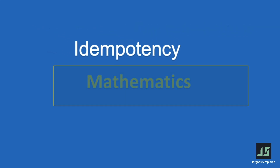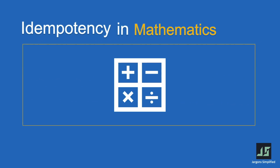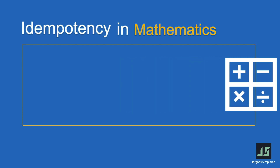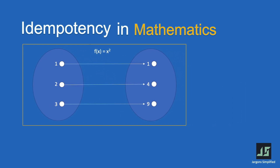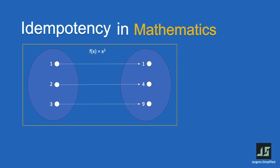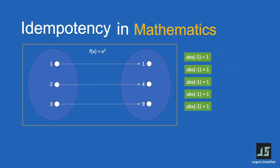In mathematics, idempotency is related to operations or functions that maintain their results when applied multiple times. If performing the operation once gives a particular outcome, repeating the operation will yield the same outcome. For example, taking the absolute value of a number is an idempotent operation because applying it multiple times does not alter the result. Similarly, multiplying a number by one, multiplying by zero, or adding zero to a number are all idempotent operations.